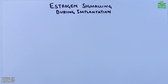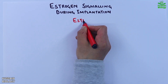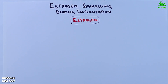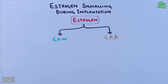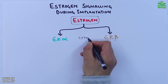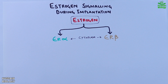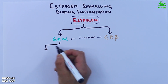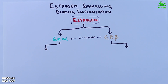At the very top of this pathway is estrogen — the key hormone. Estrogen signals through two main receptors labeled here as ER alpha and ER beta, located in the cytoplasm. These receptors play crucial roles in translating estrogen signals.